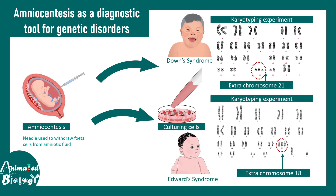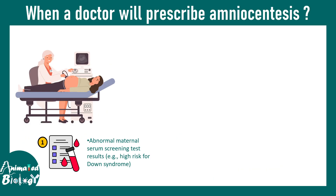Similarly, other genetic syndromes like Edwards syndrome can also be screened using the amniocentesis process followed by karyotyping. It's an extremely important and essential medical procedure.